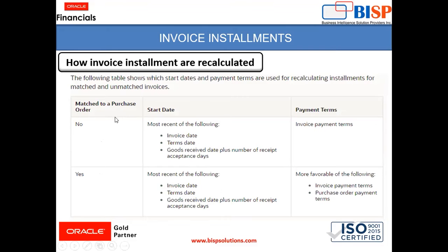While recalculating, if you have a matched purchase order, the start date will be the most recent of the following: invoice date, terms date, or goods received date plus number of received acceptance days. The payment term will be the more favorable of the following: invoice payment term or purchase order payment term.